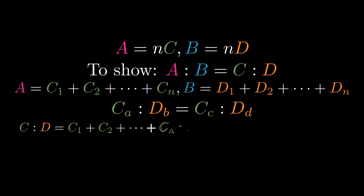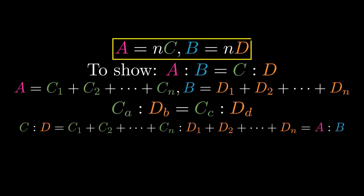So by Proposition 5.12, all the C's together to all the D's together — which is equal to A to B — is proportional to a single C to a single D.